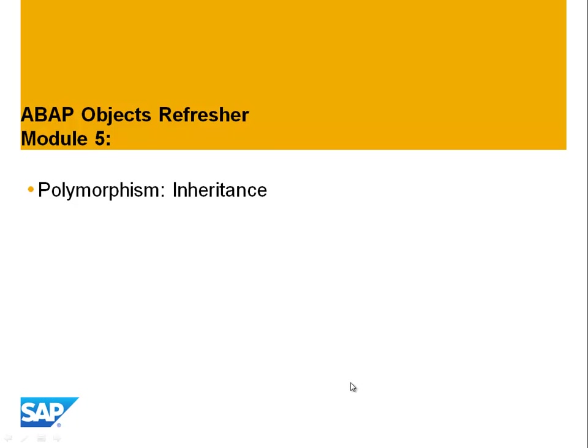Hello, welcome back to the ABAP Objects Refresher. We're coming now to Module 5, the last module, covering another variation on polymorphism and inheritance.